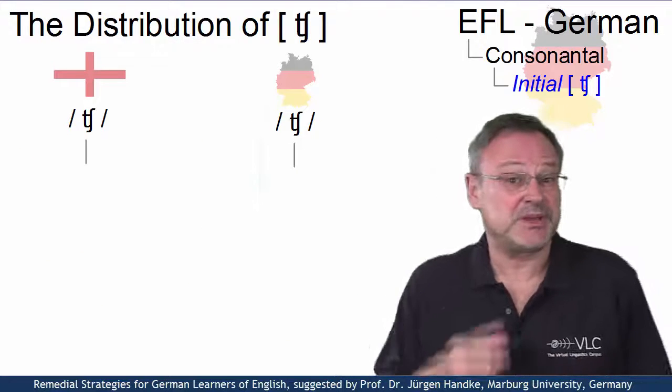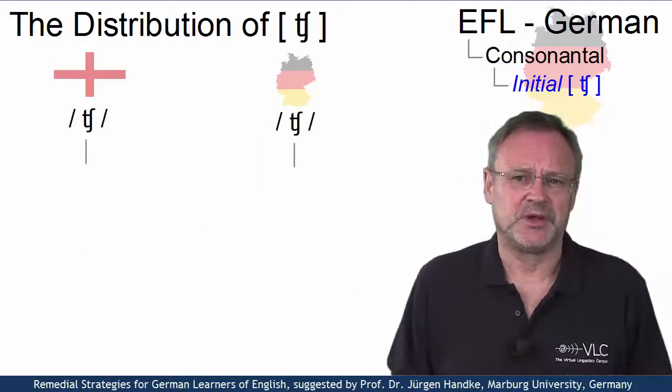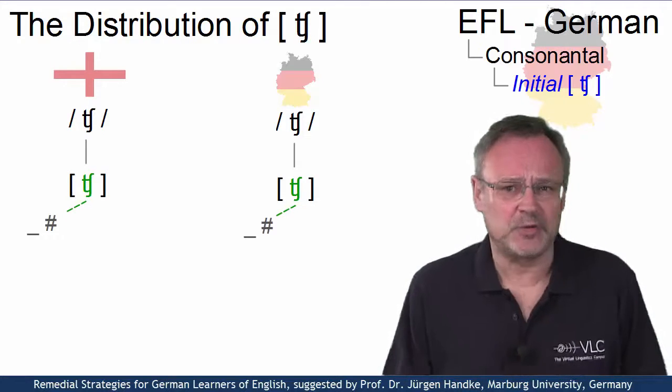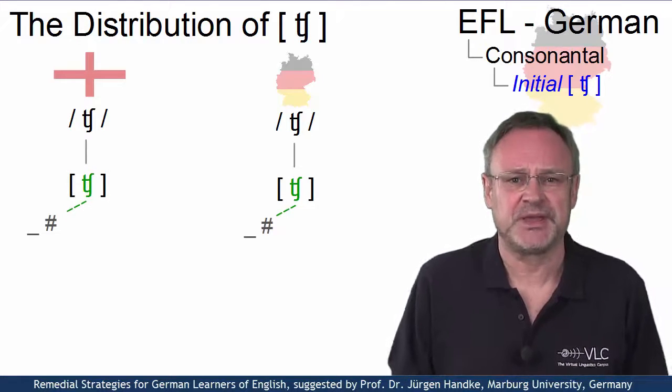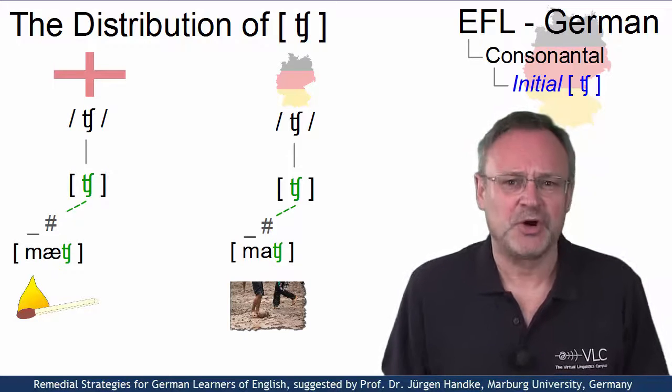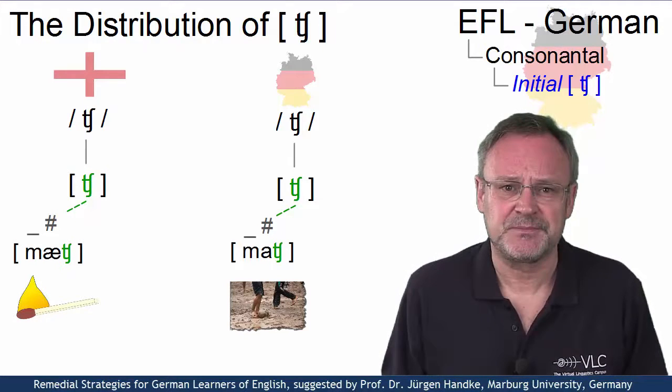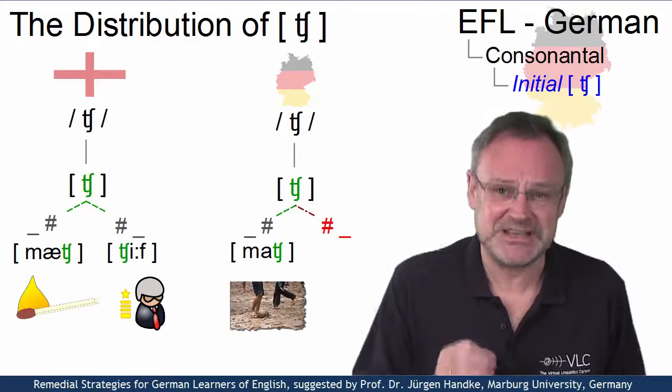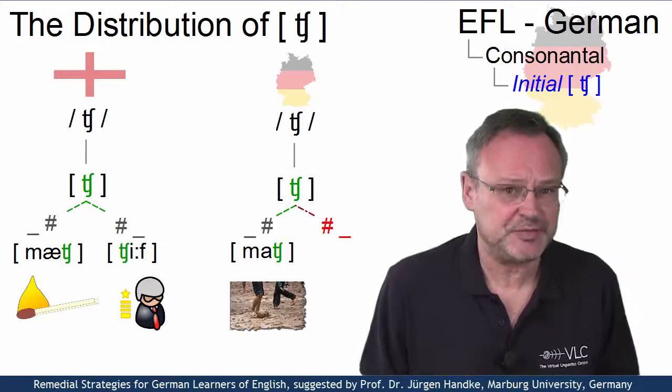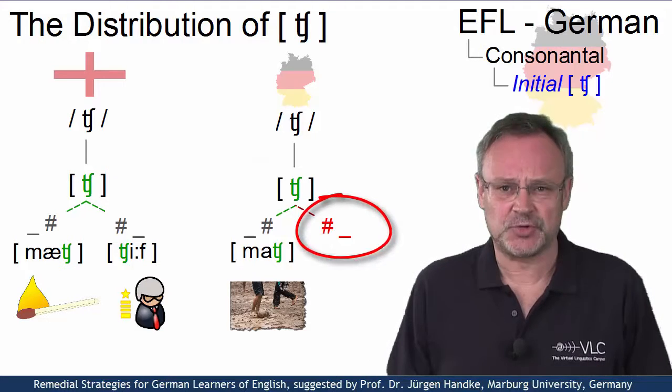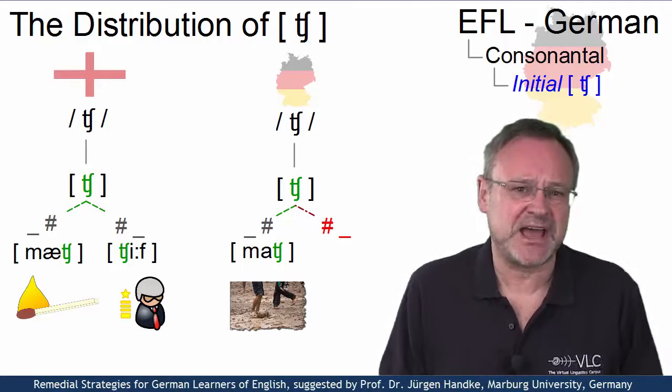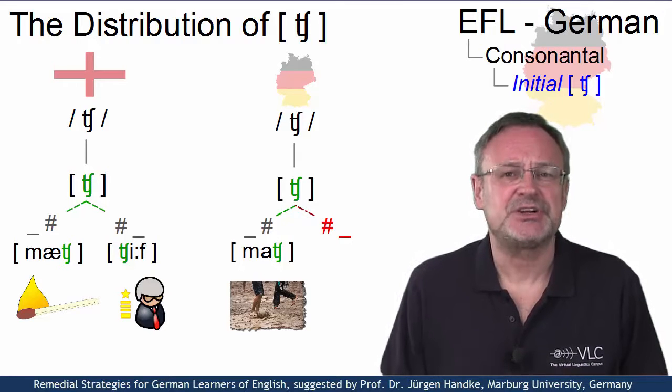The problem is a distributional one. Both English and German have the phoneme [tʃ] and an allophone which occurs in final position, as in English match or in German much. However, whereas English also has an initial allophone as in chief, this allophone does not occur in German. In fact, it is often realized as [ʃ], as in chef.